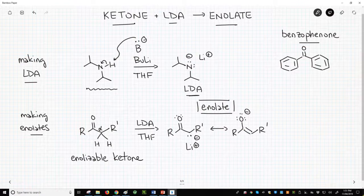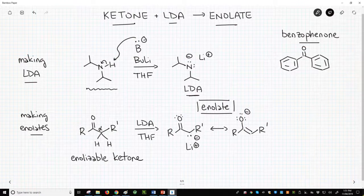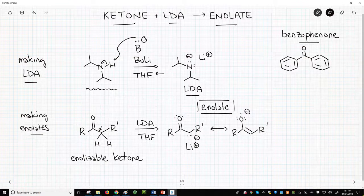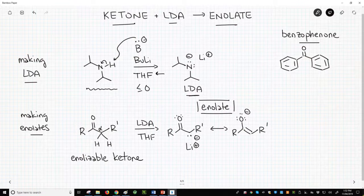The conjugate acid is butane from butyl lithium, which just hangs out in the flask. This deprotonation is normally performed in an ethereal solvent like THF, tetrahydrofuran. The solution is normally kept cold, often zero degrees or lower.